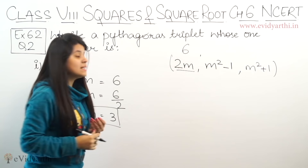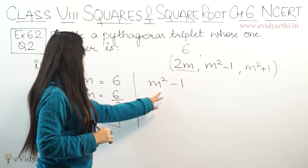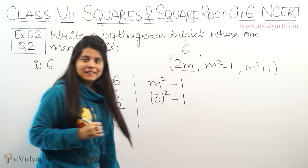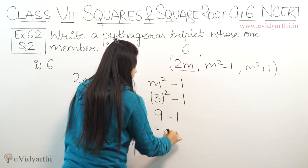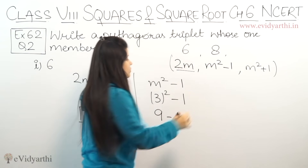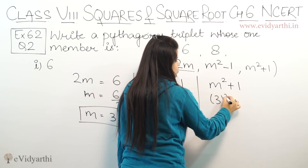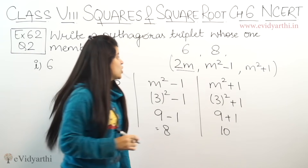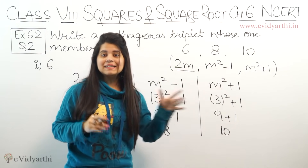Now for the second number, m² - 1. So we have to find m² - 1, which means 3² - 1. So 3² is 9, minus 1 is 8. So the second number is 8. Now the third number will be m² + 1, which will be 3² + 1. So 9 + 1 is 10. So the third number is 10. The Pythagoras triplet is 6, 8, and 10.